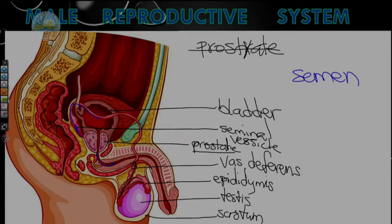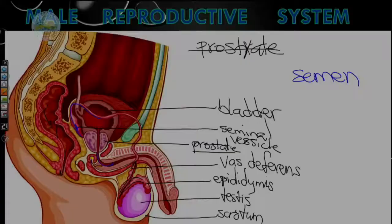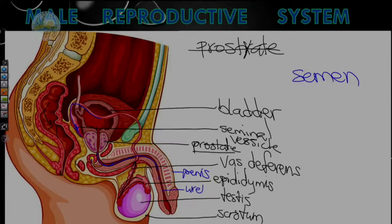The prostate gland secretes substances into the sperm, and that creates what we call semen. Semen is a mixture of sperm and fluids secreted by the seminal vesicle, the prostate gland, and a gland called the corpus gland. The sperm continue through the vas deferens, and when it enters into the penis, the tube is no longer called the vas deferens — it is now the urethra. The urethra carries urine and sperm out of the body through the head of the penis.